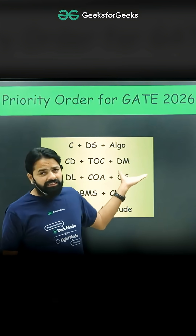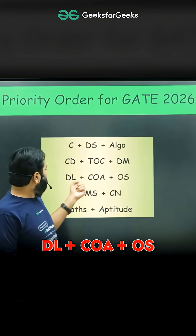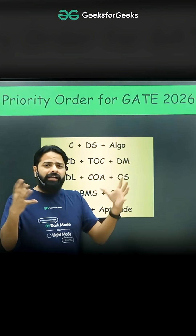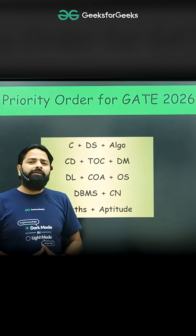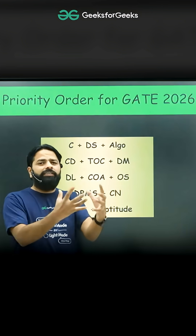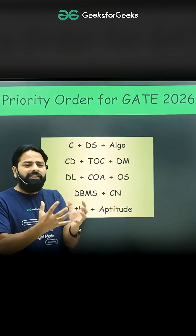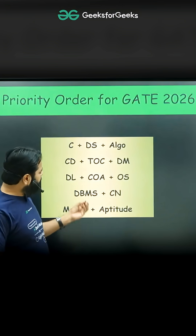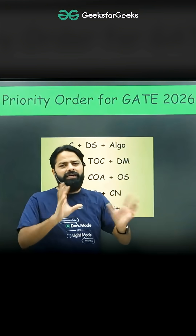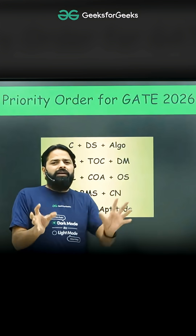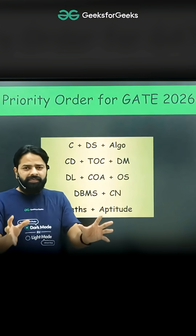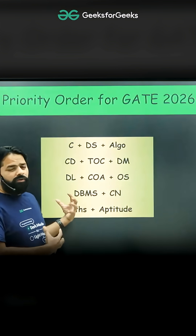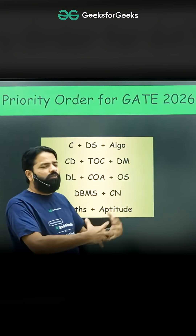Digital, CO, and Operating Systems done together give you system-related advantages and much better understanding of those subjects. DBMS and CN you can do separately, as they are somewhat different from the other subjects. DBMS is easy to complete, while CN is very vast.